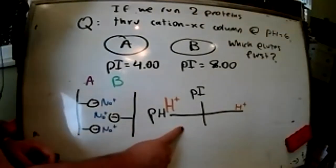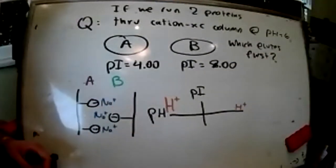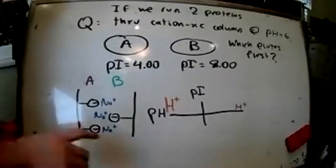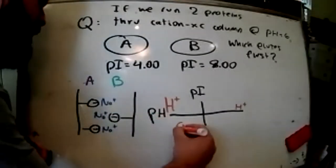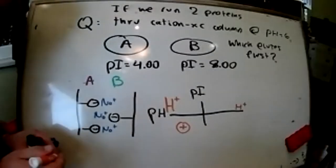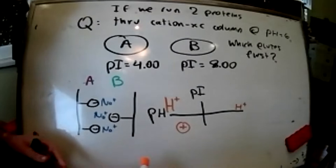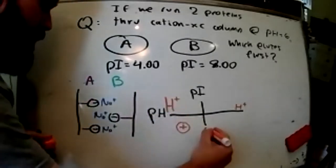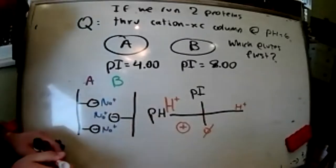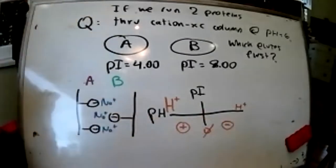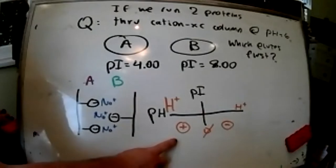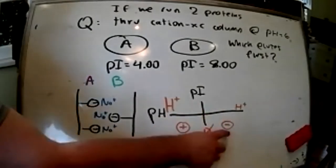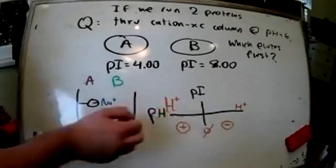What is the charge of a molecule when the pH is less than its pI? Positively charged. When pH is equal to the pI—neutral. When pH is greater than the pI—negative. So when pH is less than the pI, we have an abundance of H+ relative to that pI, and therefore the net charge on the molecule is positive. When pH is higher than the pI, we have a deficiency of H+, and we end up with a negative charge.